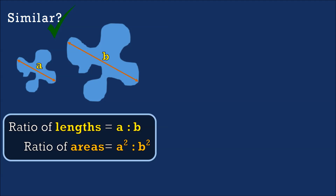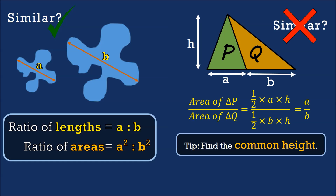To summarize: when we have two similar shapes with corresponding lengths A and B, the ratio of the lengths is A is to B and the ratio of their areas is A squared is to B squared. If we have two non-similar shapes, the tip is to find the common height. Triangles P and Q have a common height H; with corresponding base lengths A and B, the area of triangle P over triangle Q equals A over B. This marks the end of our video lesson.